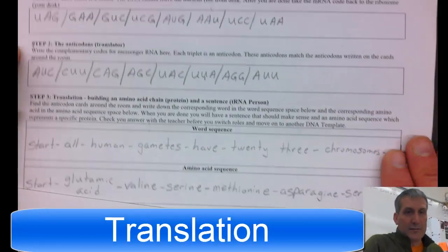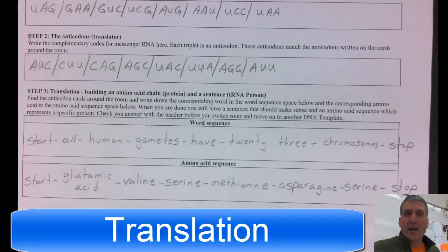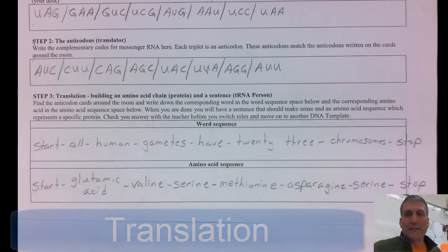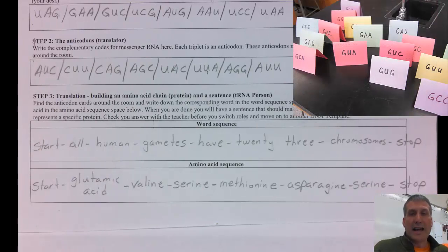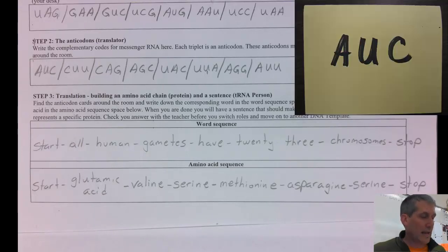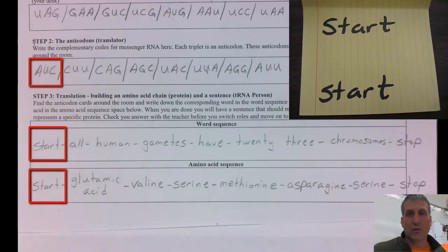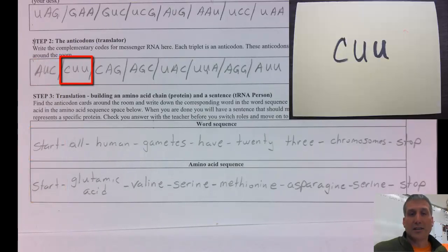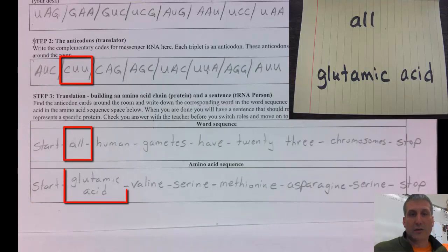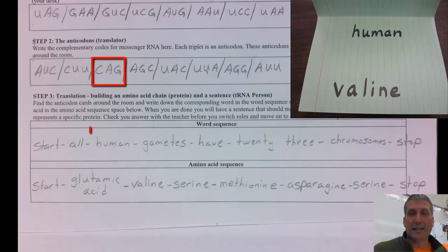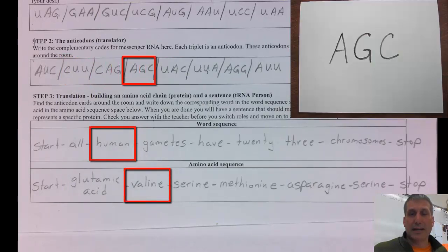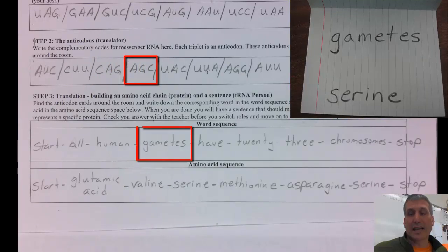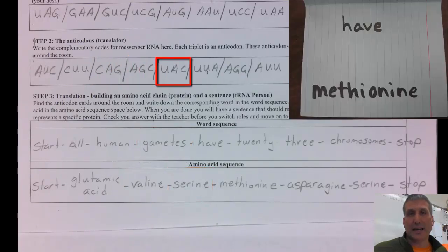The last step is translation. The tRNA person goes around the room and finds the tRNA cards that have the anticodons to match their specific sequence. In this case, it starts with AUC, which on the inside of the card says start and start — written in the word sequence and the amino acid sequence. The next anticodon CUU has a card that says all and glutamic acid. You continue finding the tRNA cards with the anticodons and putting down the specific word sequence and amino acid sequence based on that code.